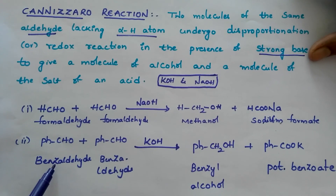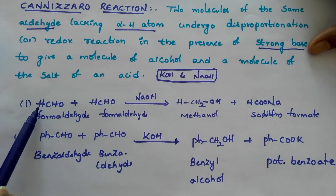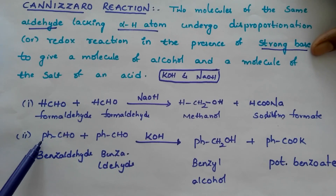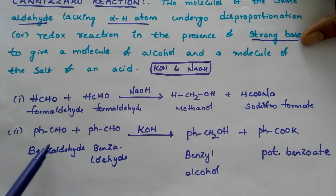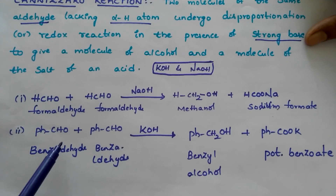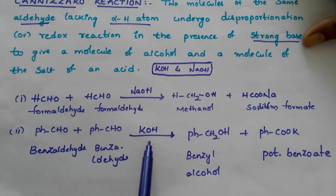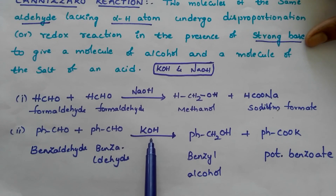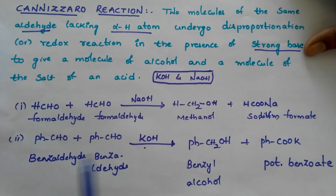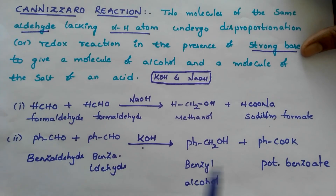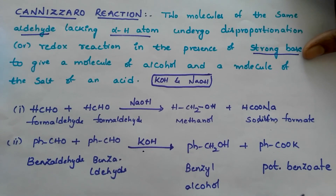Similarly, benzaldehyde — we know that formaldehyde and benzaldehyde do not have any alpha hydrogens. Two benzaldehyde molecules react in the presence of a base like potassium hydroxide and form benzyl alcohol and potassium benzoate.